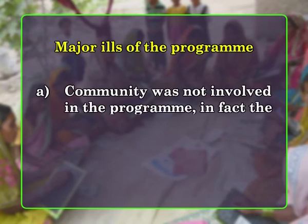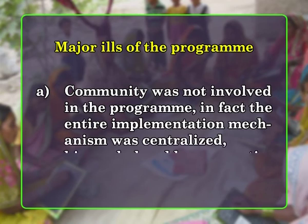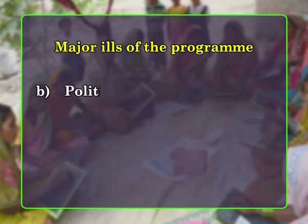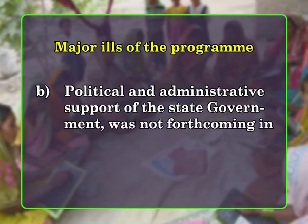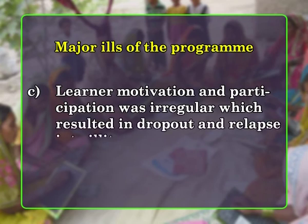The launching of the National Literacy Mission in 1988 led to a review of all ongoing programs. Between 1978 and 1985, the program was evaluated by a number of professional evaluating agencies, which pointed out major ills: number one, the community was not involved in the program and the entire implementation mechanism was centralized, hierarchical, and bureaucratic; number two, political and administrative support of the state government was not forthcoming in an adequate manner; and number three, learner motivation and participation was irregular, resulting in dropout and relapse into illiteracy. Considering these deficiencies, a change in strategy was felt, and the entire adult education program had to be shifted to a mission model, which showed remarkable progress in the literacy scenario in the country.